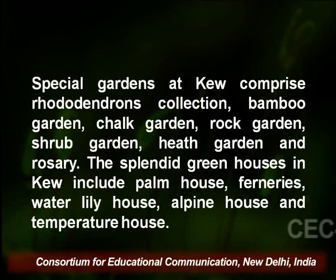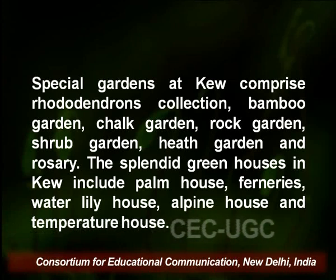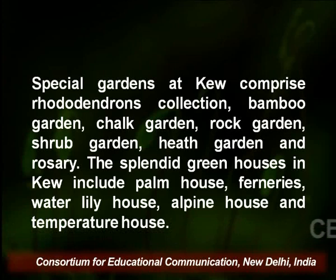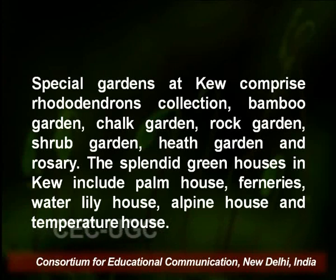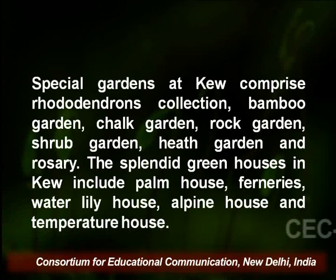The special gardens at Kew comprise rhododendron collections, the bamboo garden, chalk garden, rock garden, shrub garden, heath garden, and rosary. The splendid greenhouses in the Kew garden include a palm house, fernery, water lily house, alpine house, and temperate house.